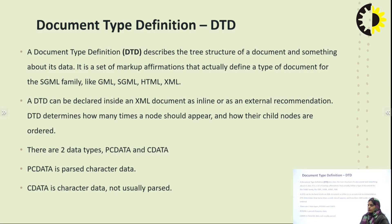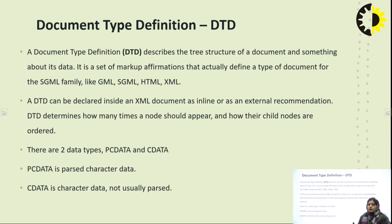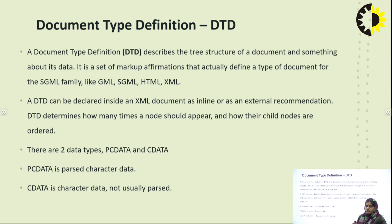XML stands for Extensible Markup Language, and it is used to provide structure for documents. Document Type Definition describes the structure of an XML document in the form of a tree structure. It tells us about the root element — in a tree-like structure we have a root node, child nodes, and parent nodes. DTD describes the tree structure of an XML document and also describes the contents of its data.